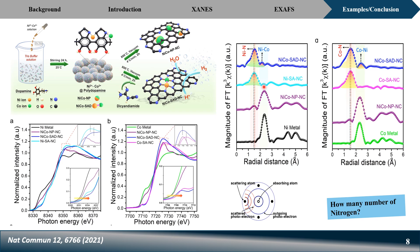From the EXAFS data, the interference between the absorbing and scattering atoms tells us which atoms are in the neighborhood and at what distance. In the nickel EXAFS spectra, peaks for nickel-nitrogen and nickel-cobalt coordination appear, indicating nickel is coordinated with both nitrogen and cobalt atoms. Similarly, the cobalt EXAFS spectra shows cobalt is coordinated with both nitrogen and nickel atoms.